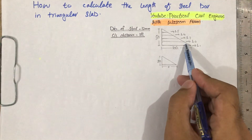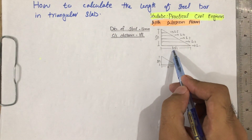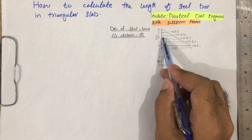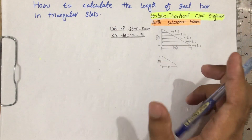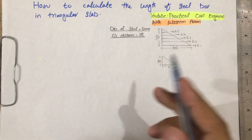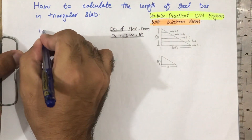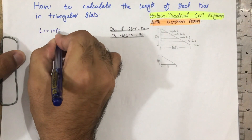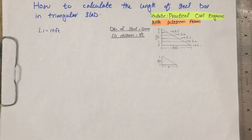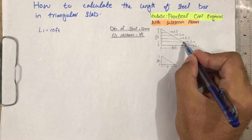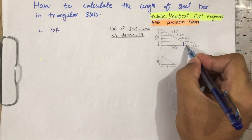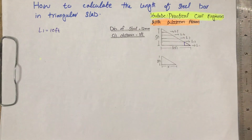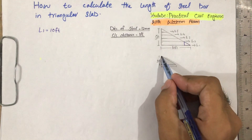As we know, L1 will be the same as the full length, because this is bar number one, bar number two, bar number three, bar number four, and bar number five. So L1 is equal to 10 feet. Now we have to find L2, and for that we need to subtract a certain length from it.